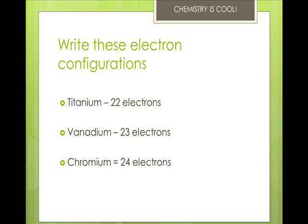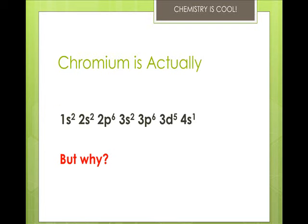And chromium has 1s2, 2s2, 2p6, 3s2, 3p6, 3d4, and 4s2 is expected, but it is wrong. Because chromium is actually 1s2, 2s2, 2p6, 3s2, 3p6, 3d5, 4s1. This gives us two half-filled orbitals because they are slightly lower in energy and more stable.